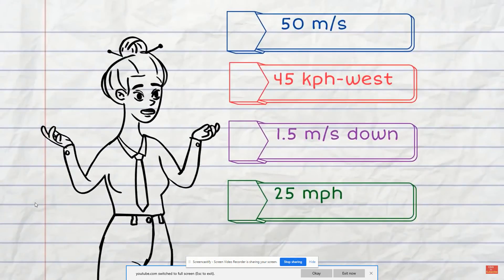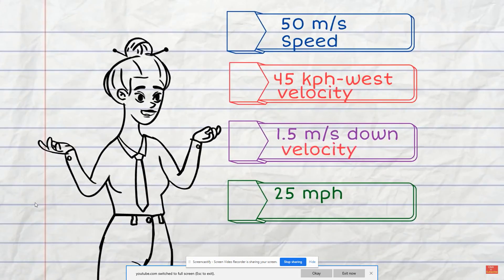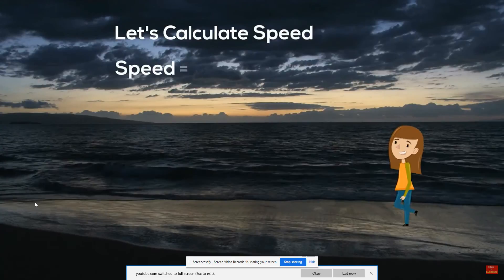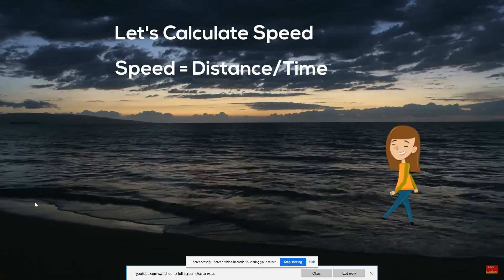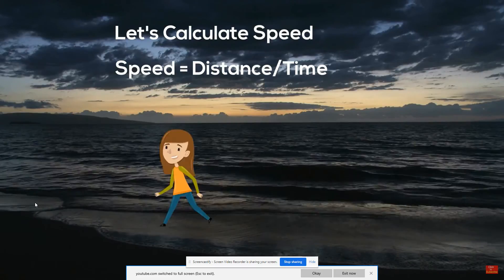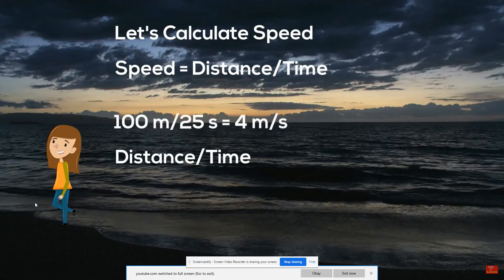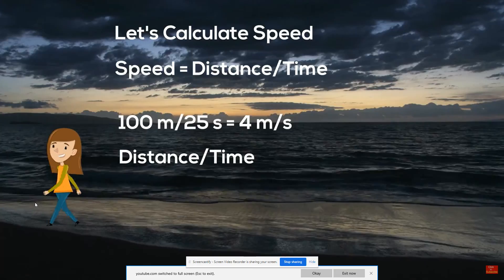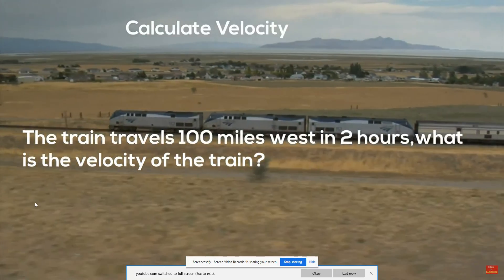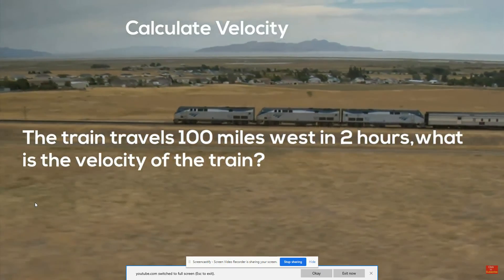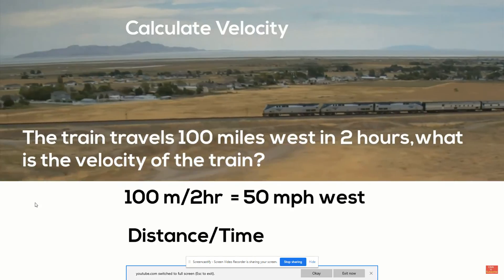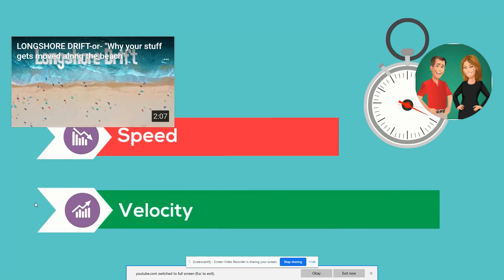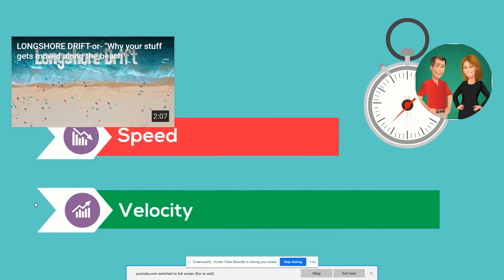You can use the formula distance divided by time to calculate speed and velocity. For example, a walker travels 100 meters in 25 seconds: 100 divided by 25 equals 4 meters per second. A train travels west 100 miles in 2 hours — the velocity is 50 miles per hour west. So speed measures rate of distance over time, and velocity is speed in a particular direction.